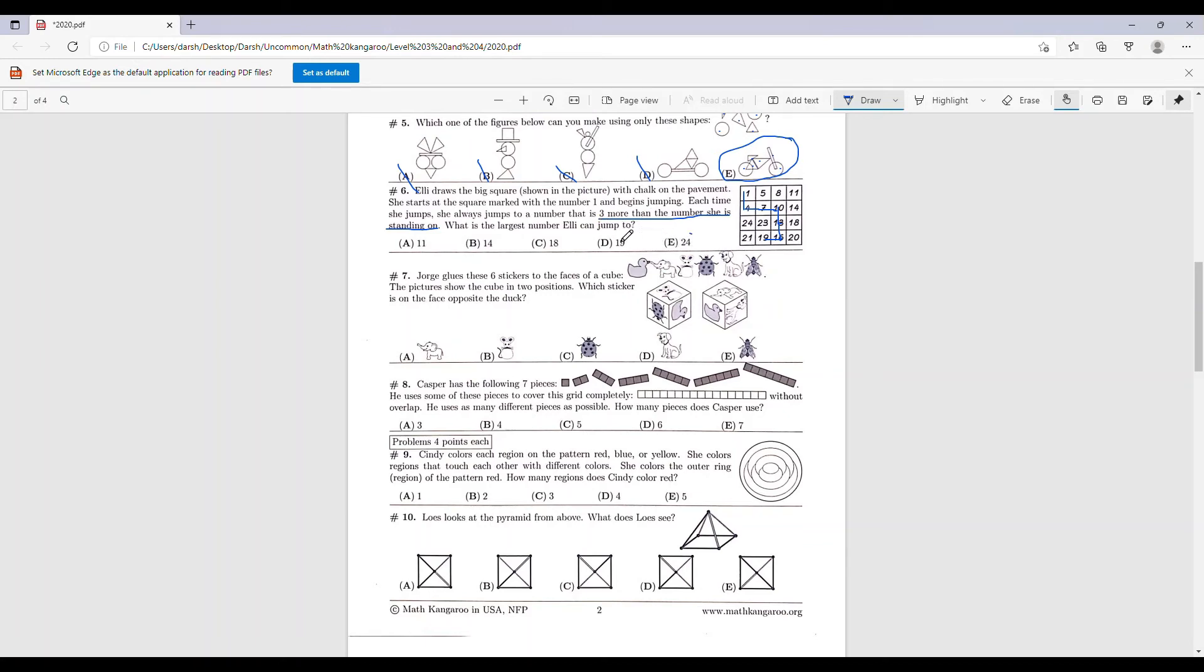So that's why the answer is D, 19, because it's the largest number that Ellie can jump to.